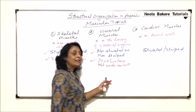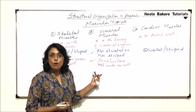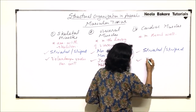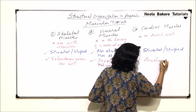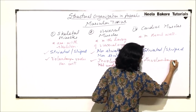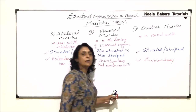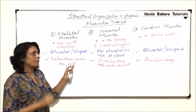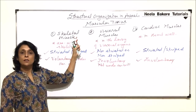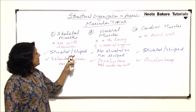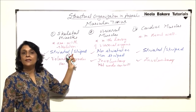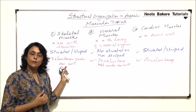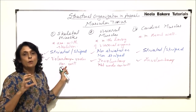Cardiac muscles are also involuntary — we cannot control the movement of the heart muscles. So the name given is based on function. Skeletal muscle is named on the basis of its location, striated on the basis of its appearance, and voluntary on the basis of its function — the way it works.